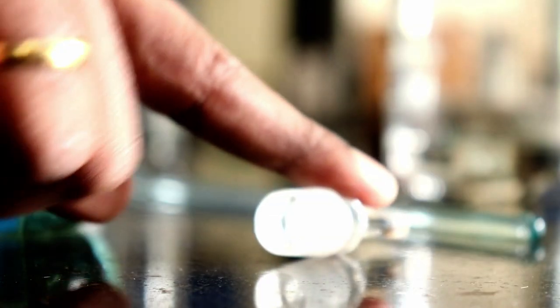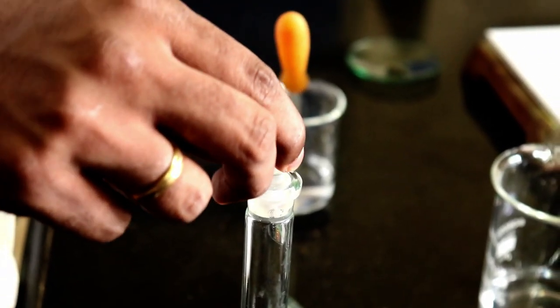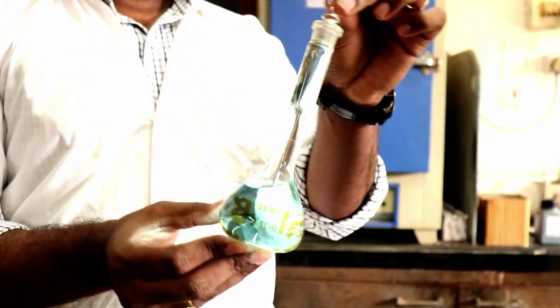Put the stopper on the standard measuring flask and make it upside down two to three times.